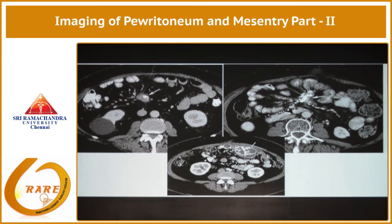Both carcinoid and sclerosing mesentritis can cause complications secondary to the desmoplastic reaction. You can have bowel wall thickening secondary to ischemia, and you can have obstructions, etc.